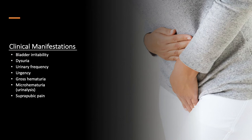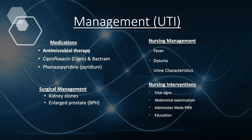Clinical manifestations of UTIs include bladder irritability and dysuria — pain upon urination — as well as urinary frequency and urgency. Hematuria may be seen depending on the infection; this is blood within the urine. Microhematuria is small amounts of blood that will only be detected in laboratory testing. Suprapubic pain may also be manifested.